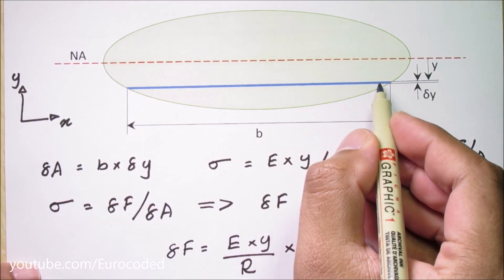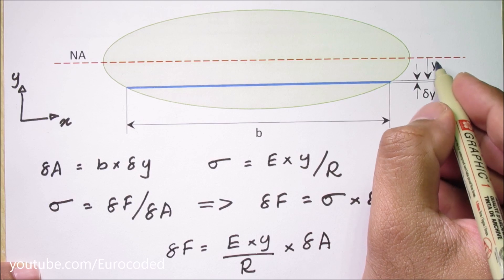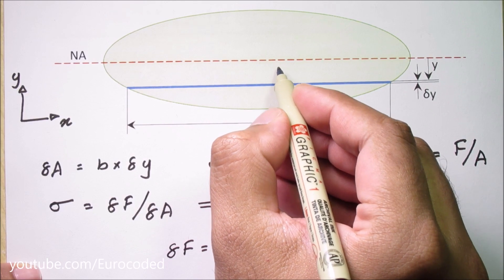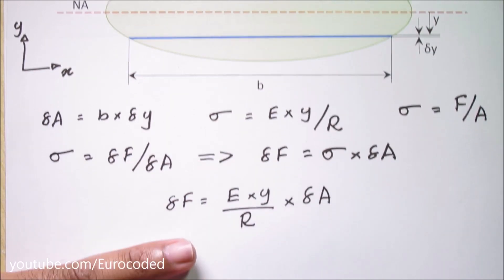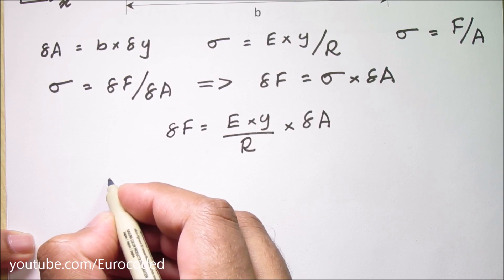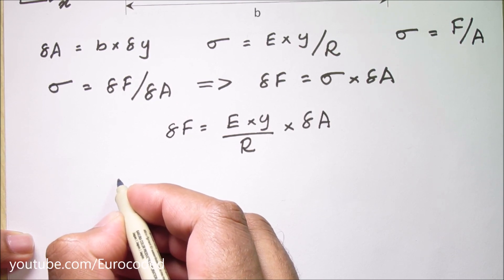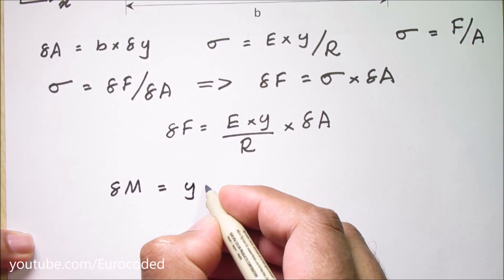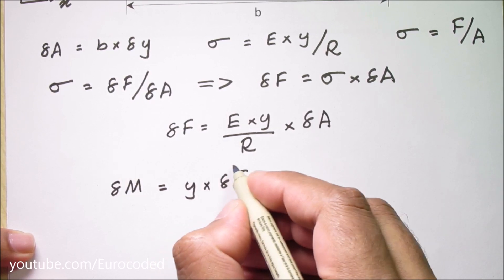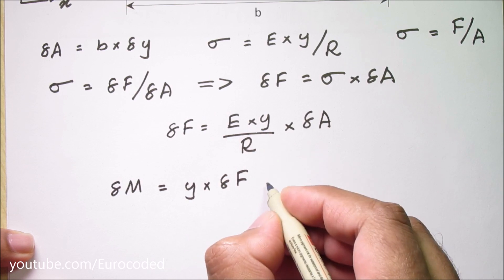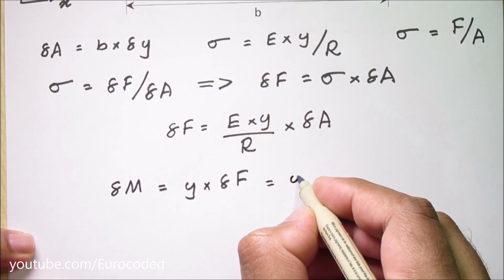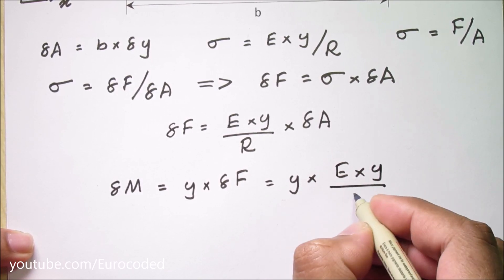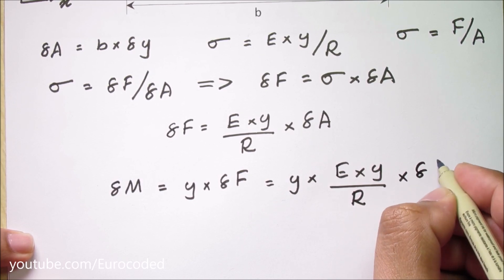Now we know the force in this small strip and the distance from the neutral axis to this strip. So we can calculate the bending moment about neutral axis using those values. We can write the bending moment in the small strip about neutral axis delta M is equal to y times delta F. Now we can replace this delta F with this expression and we can write delta M is equal to y times E times y over r times delta A.